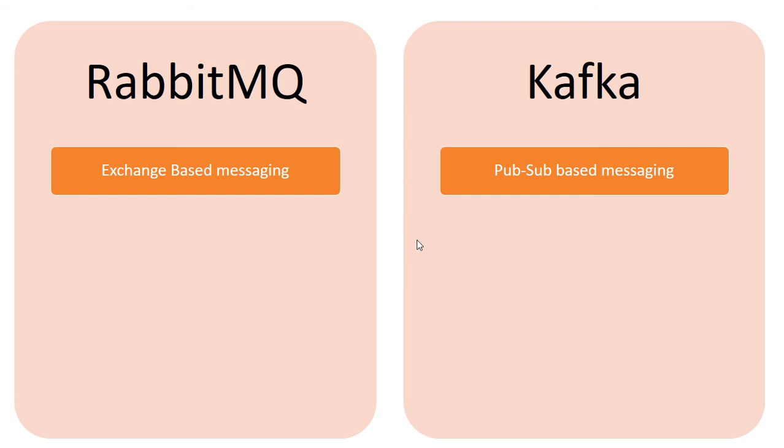You can read about these exchanges in the video where I explained the basics of RabbitMQ. Depending on the type of exchange, messages are routed based on regular-expression-based patterns, direct one-to-one correlation between the exchange and the queue, or even a PubSub model. In Kafka, messages are written to the commit log, and from there, based on the PubSub mechanism, any number of consumers can read from that commit log based on provided offsets.